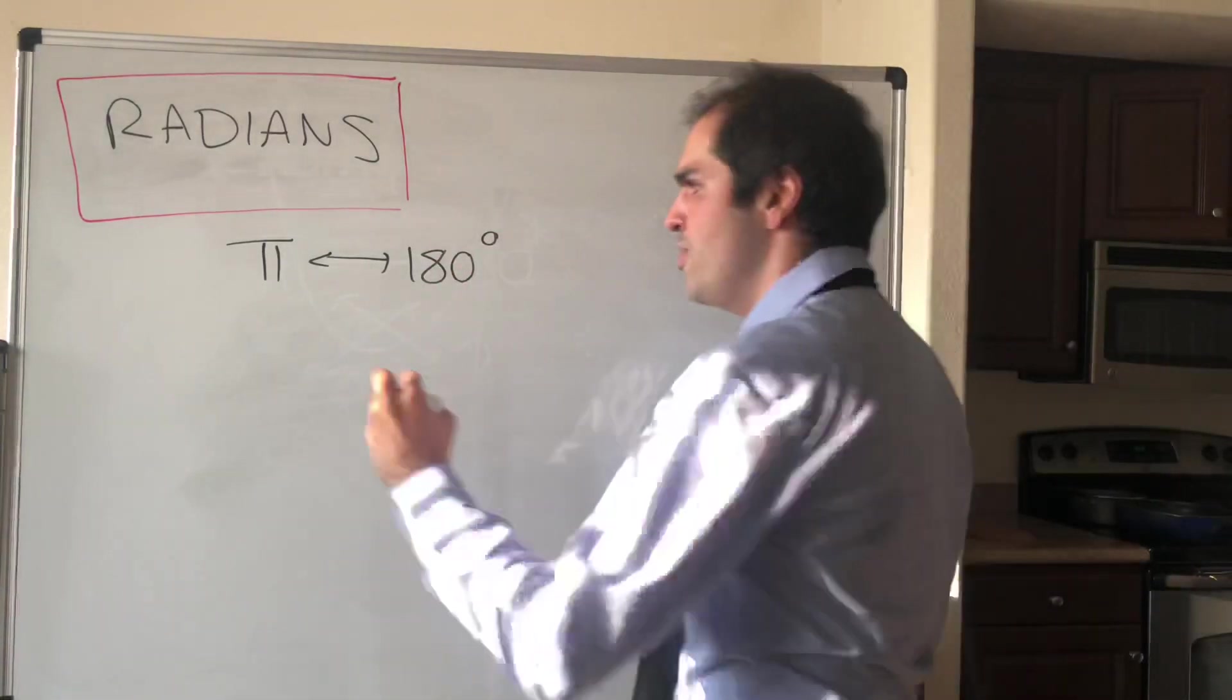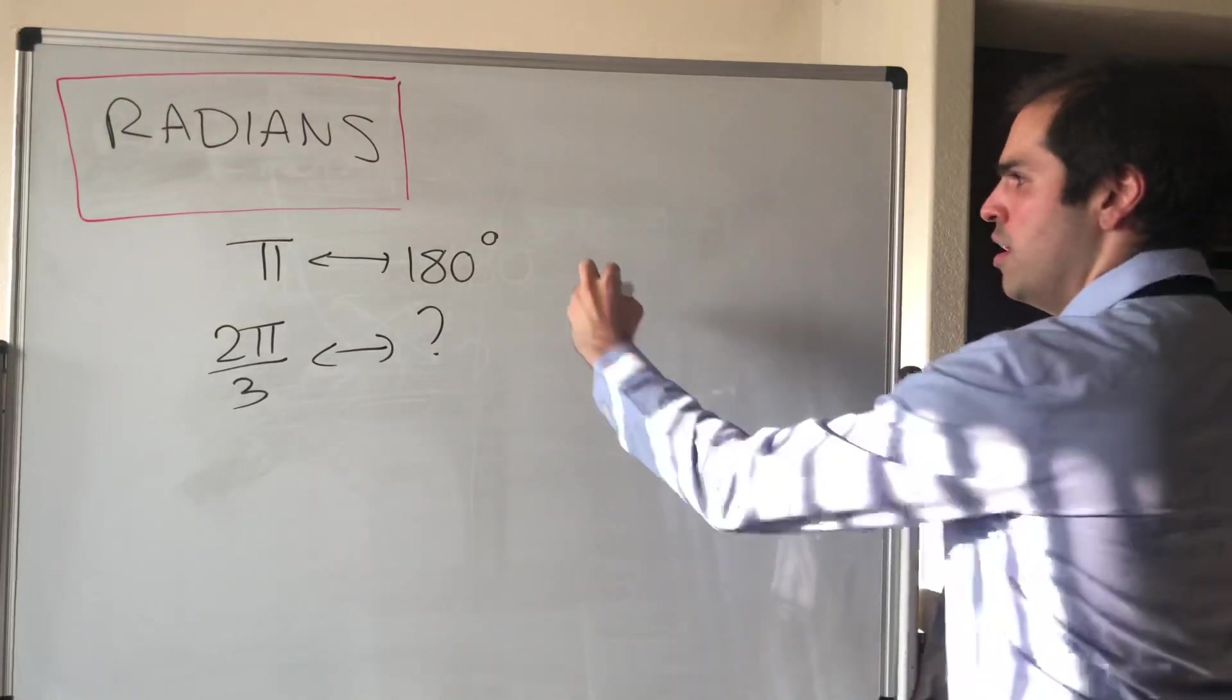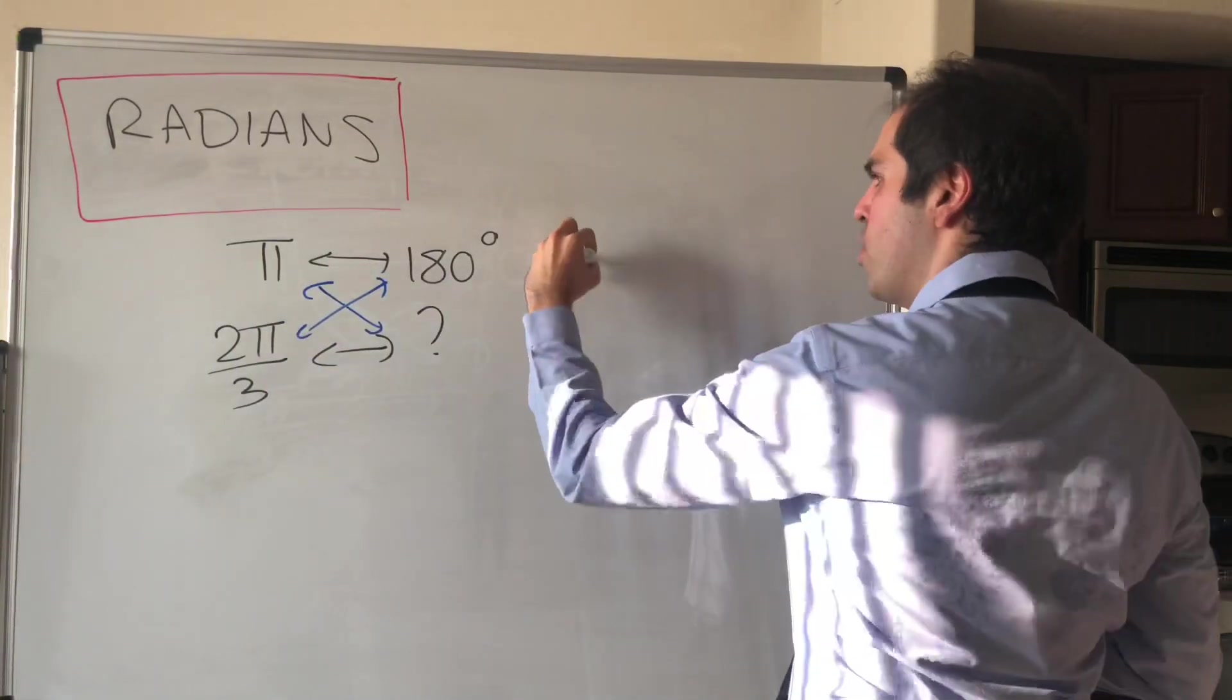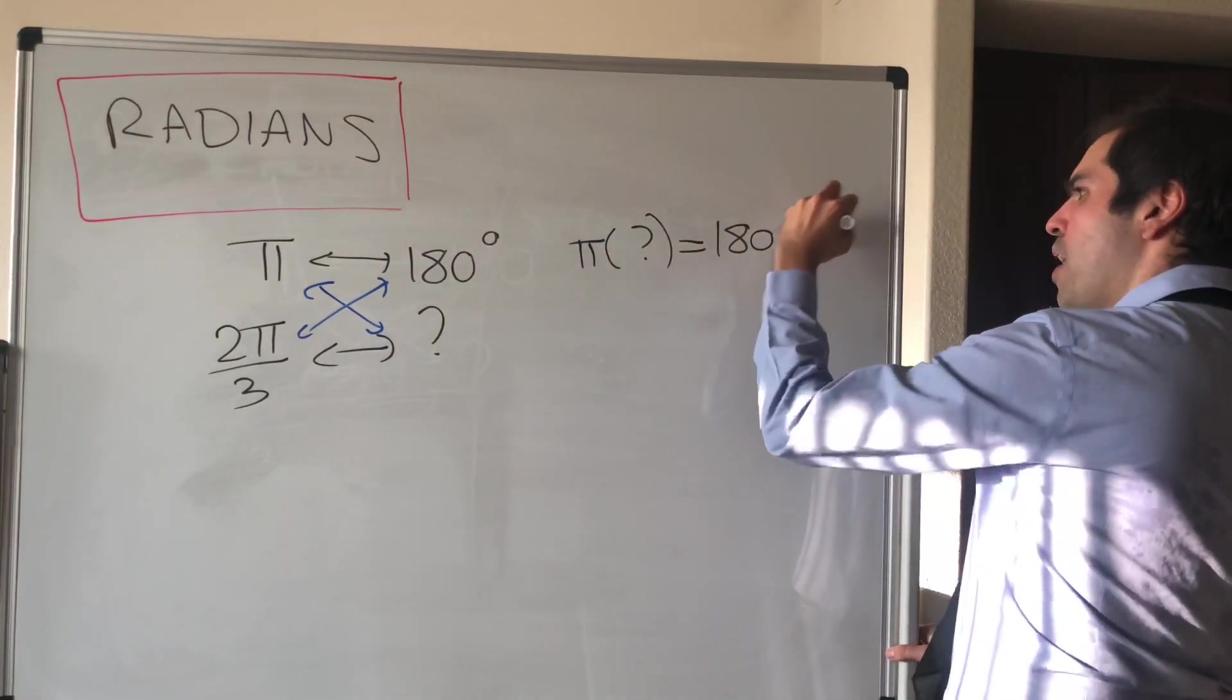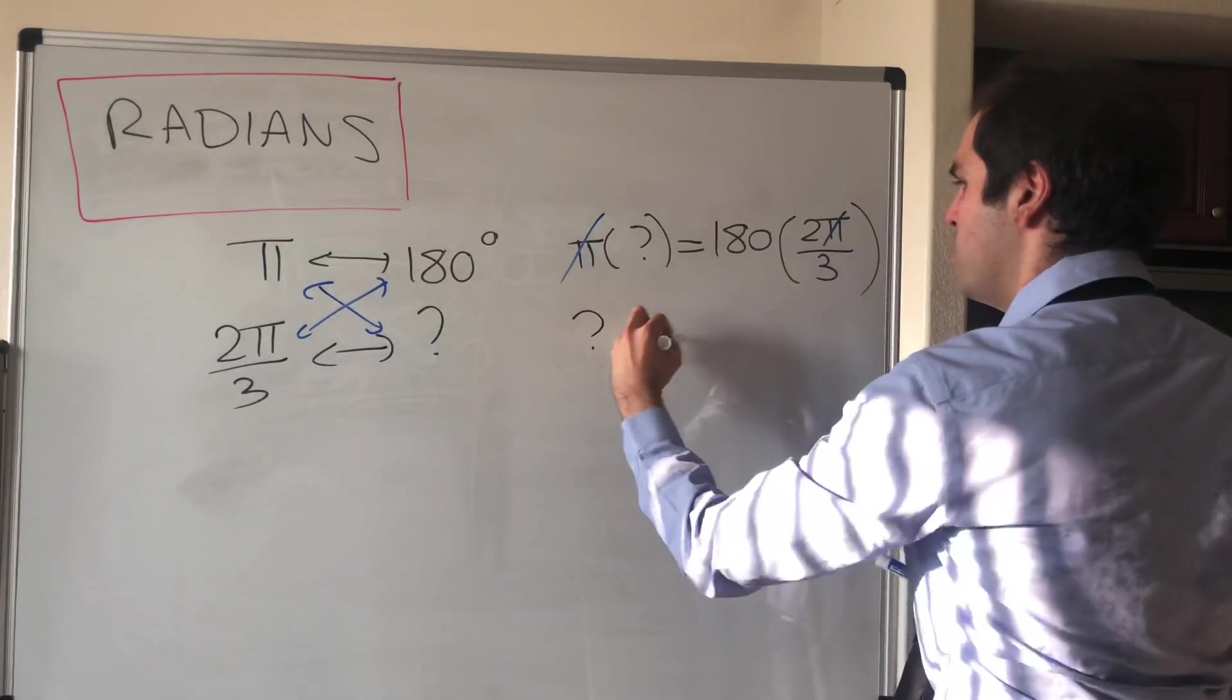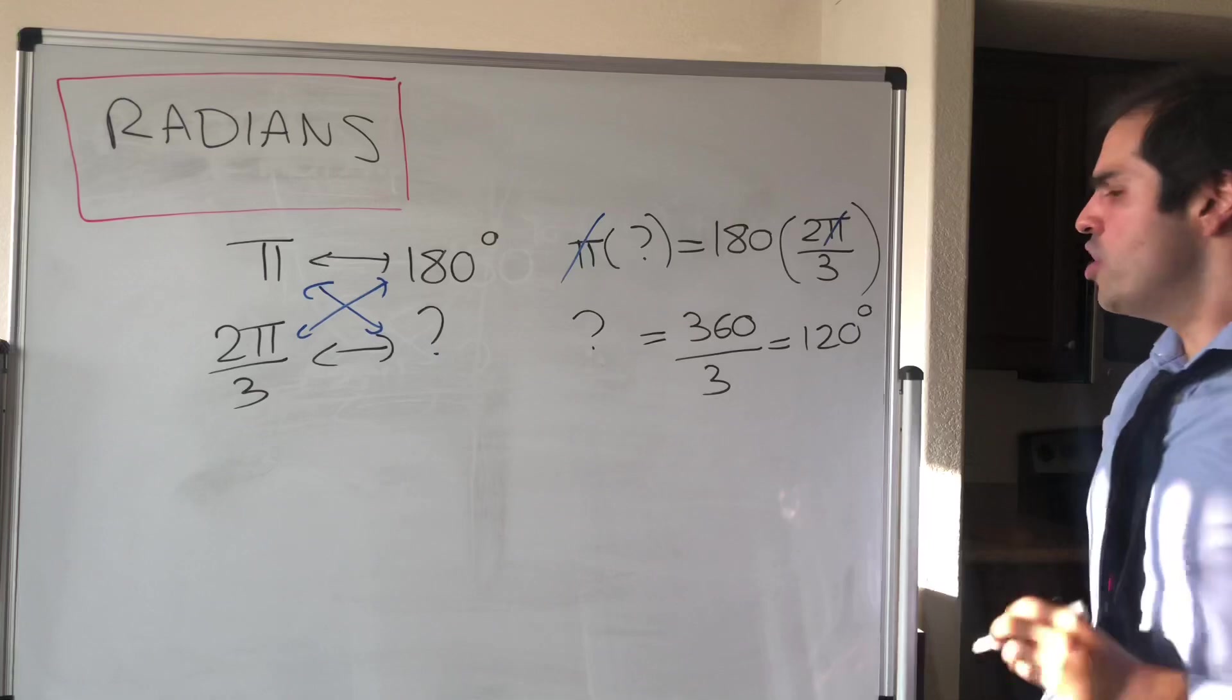For instance, let's try to figure out what 2π/3 radians is in degrees. Well, everything is proportional, so you set π times question mark equals 180 times 2π/3, and then the π cancels out, and you get question mark equals 360/3, and that's 120. So 2π/3 is 120 degrees.